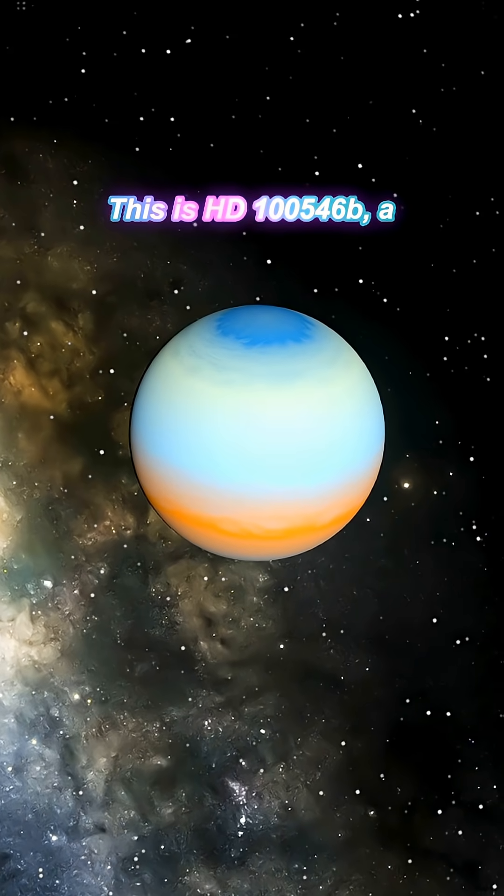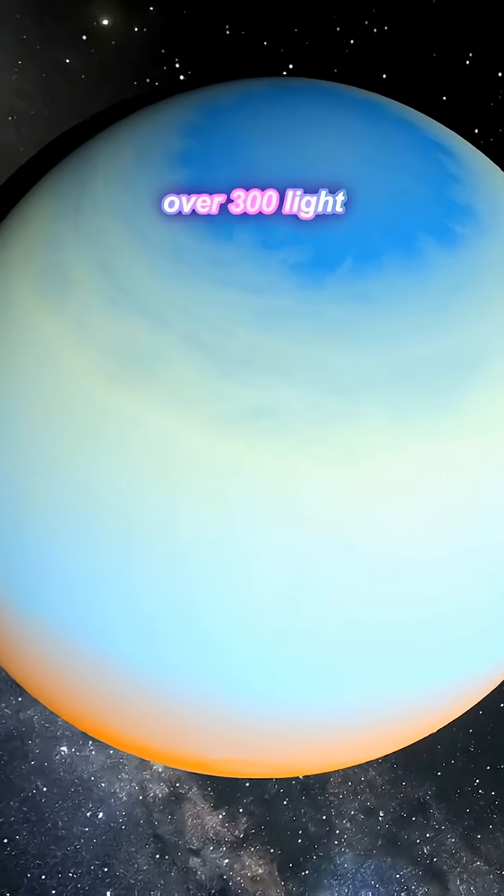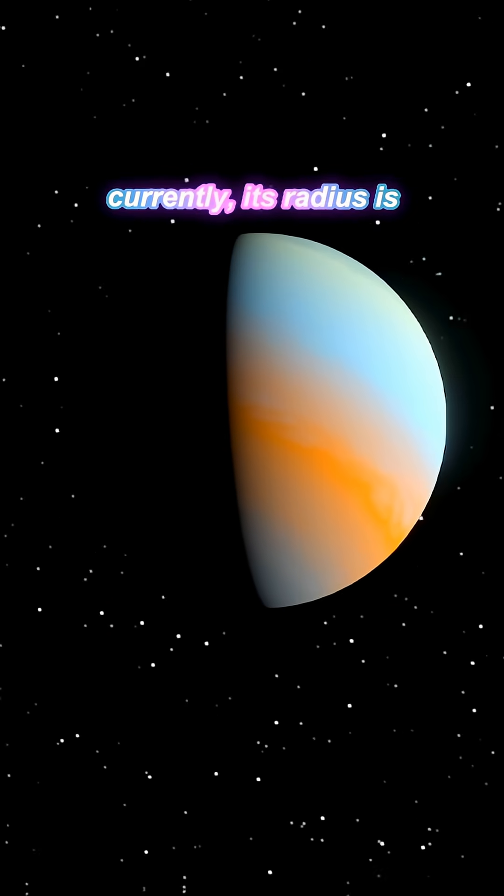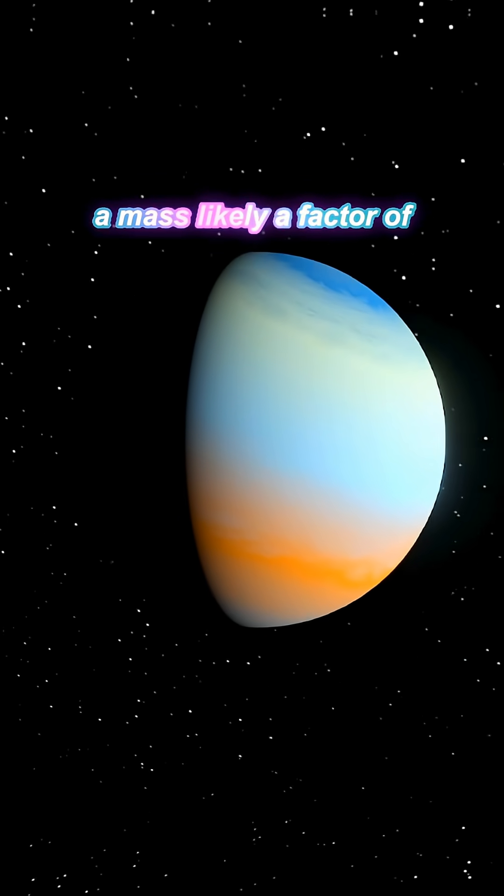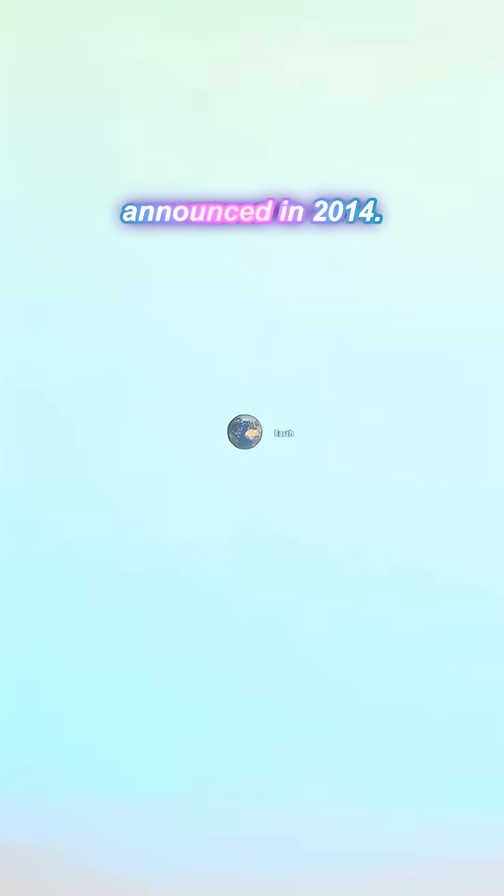This is HD100546b, a young exoplanet gas giant over 300 light-years away from Earth. While its density is largely unknown currently, its radius is 77 times that of Earth, with a mass likely a factor of hundreds or more than that. Its discovery was announced in 2014.